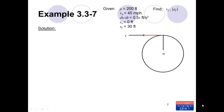Continuing on to the solution, the first thing we're asked to determine is the final speed. We're given a lot of information about travel along the path, so we can treat the tangential direction — the motion along the tangential direction — as a rectilinear problem. We're not moving in a straight line, but we are moving along a path described by a single coordinate, s, where s is the distance traveled along the path. The information about how the speed changes is in essence the tangential component of acceleration.